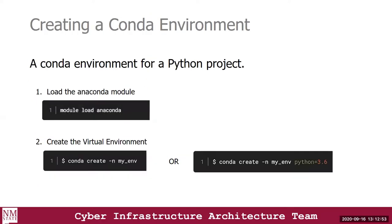The first thing we want to do is load Anaconda, which we've done, and then create the environment. There are two methods of creating a Conda environment. The first method creates the environment without installing any packages. The second method specifies a given package to install while creating the environment — for example, specifying Python 3.6 during the creation of the environment.